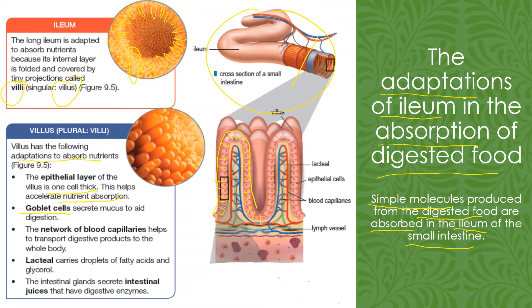Villus also has goblet cells. In the next slide we are going to see the goblet cells. The function of the goblet cells is to secrete mucus, and this mucus helps the process of digestion.